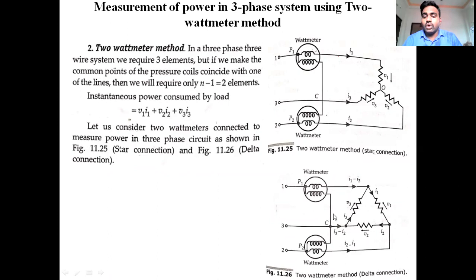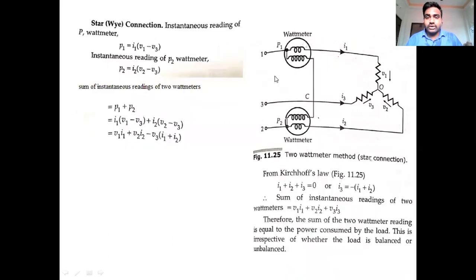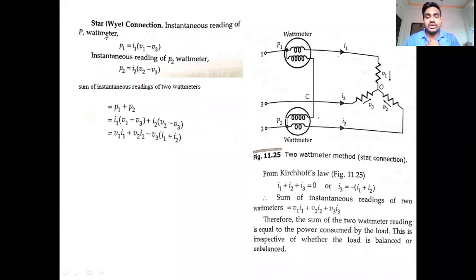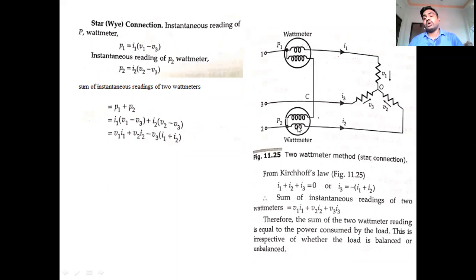We are considering only two wattmeters connected in a three-phase line, either star or delta connected load. The current coil of wattmeter 1 is connected in series to line 1, and current coil of wattmeter 2 is connected in series to its line. All potential coils are connected to a common point.